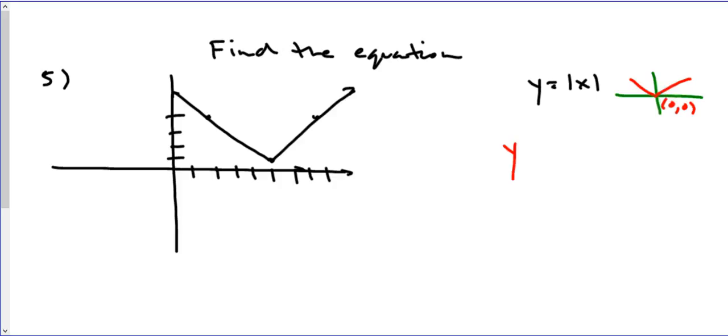From here, we're going to fill in this chart: A times the absolute value of X minus H plus K. To do that, we have to figure out the transformations. We want to find the vertex first. We can identify the vertex. It appears to be right here. Where does that vertex go?